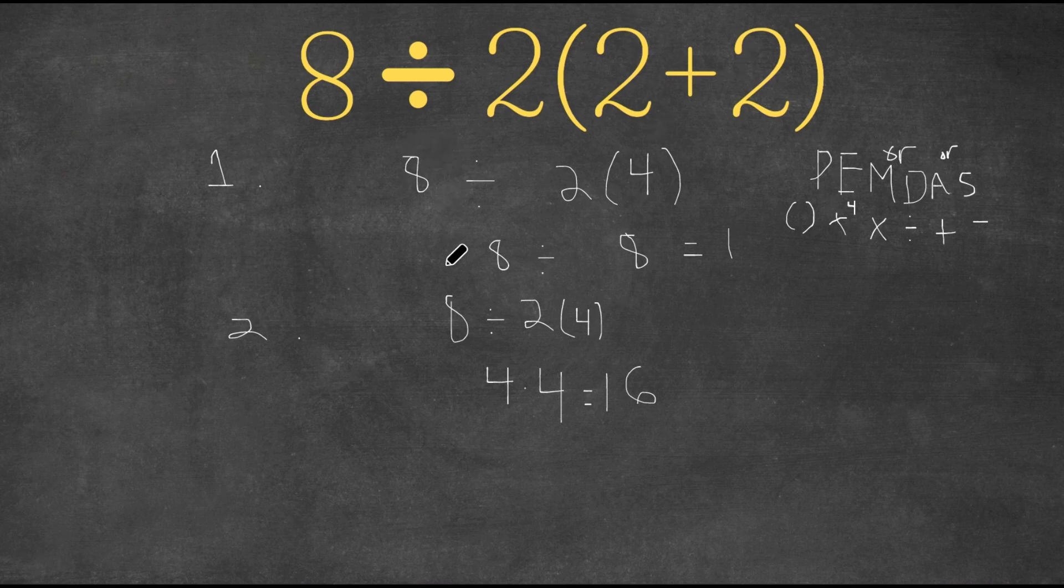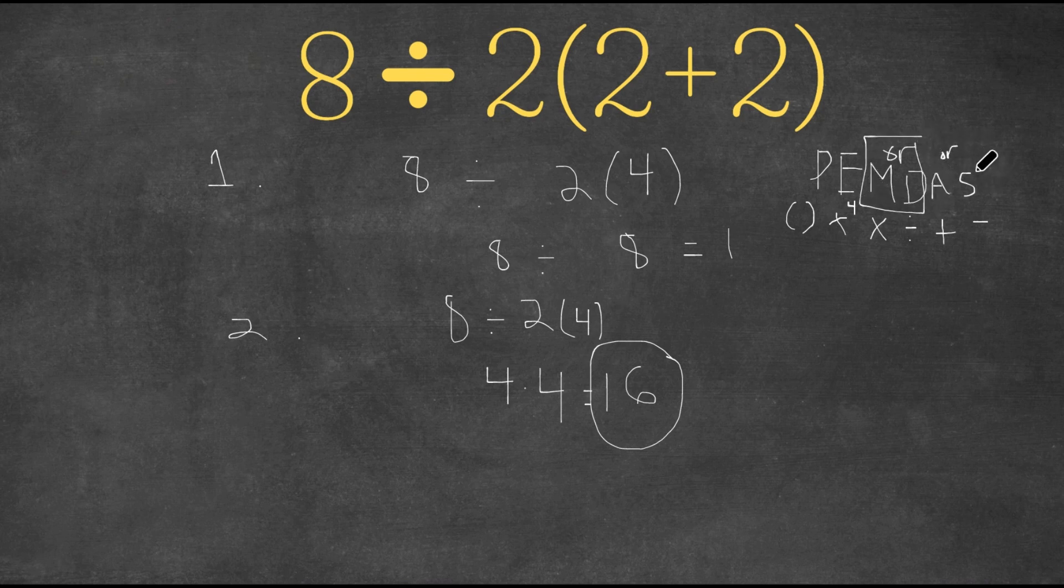So we would first do 8 divided by 2, which is 4, and then we would multiply it with the 4 to get 16. So 16 is actually the right answer here. And multiplication and division comes first, and then you look for addition or subtraction. And the same thing, whatever comes first left to right, you do that first.